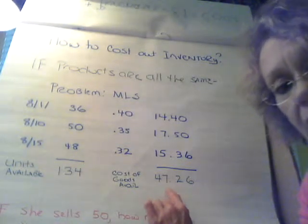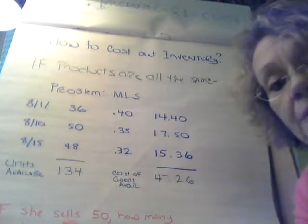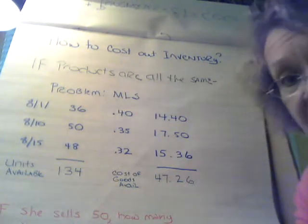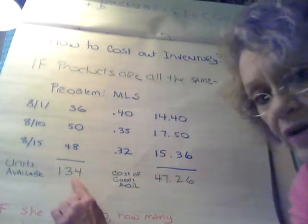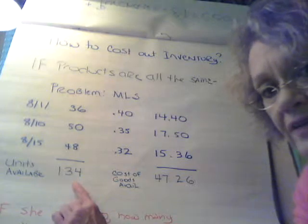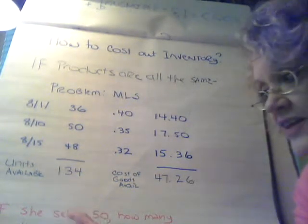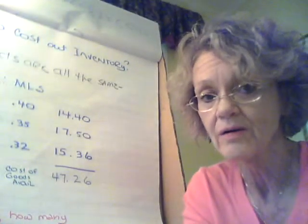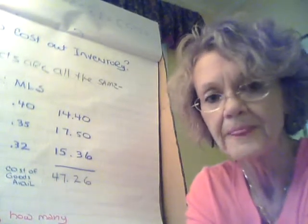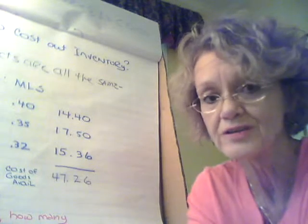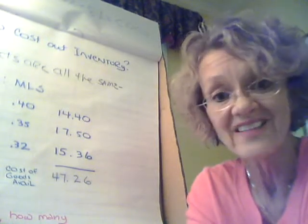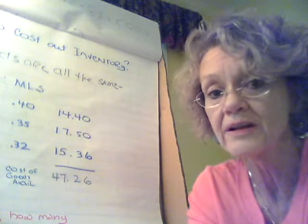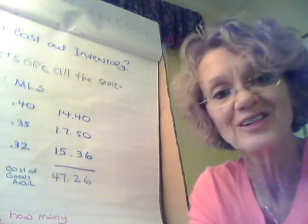She has $47.26 invested in that inventory ready to sell. Now she's going to sell some during the summer. If she sells 50, how many will be left? From a unit standpoint that's easy: 134 minus 50 equals 84 left. Things have to be in either ending inventory or sold. Remember the equation: beginning inventory plus purchases equals cost of goods available for sale, minus ending inventory equals cost of goods sold — or rearranged, beginning inventory plus purchases minus cost of goods sold equals ending inventory.